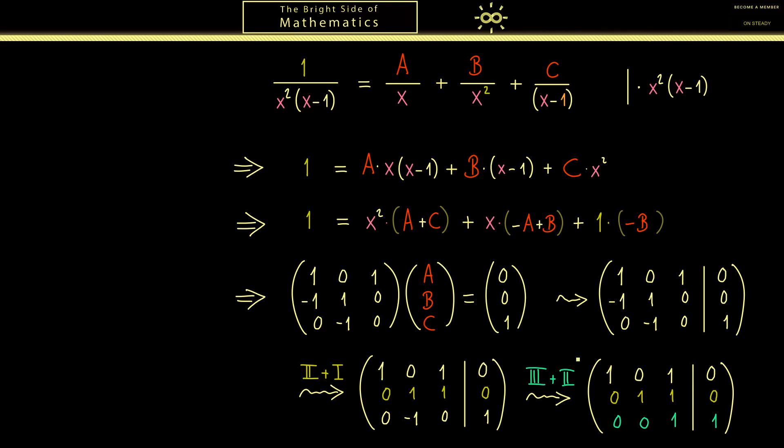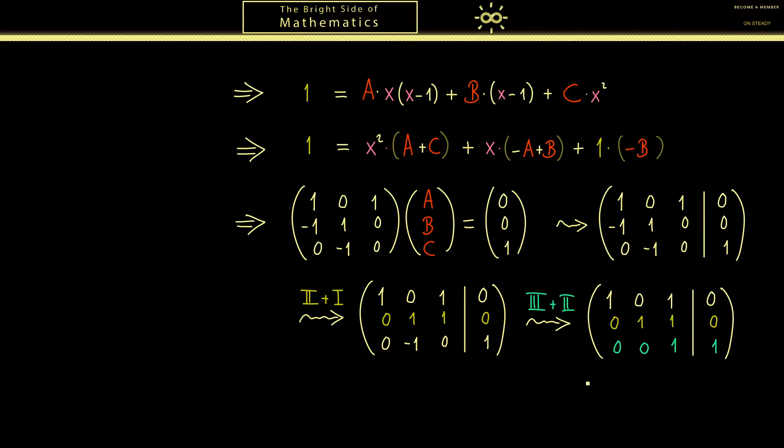And then we are finished, we can read the solution here. Namely first we have C equals 1. So this is simply this last equation here. And by using this the second equation tells us that B is minus 1. And finally the first equation gives us the same for A.